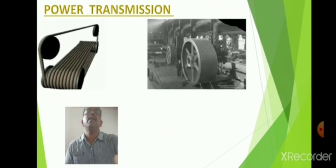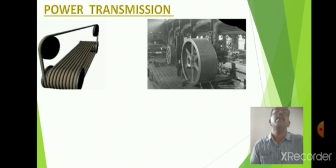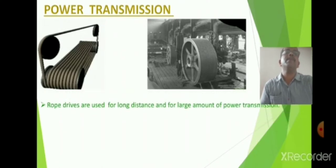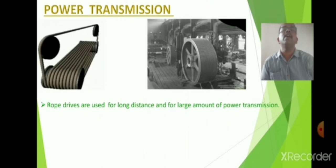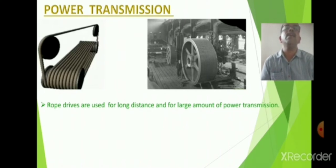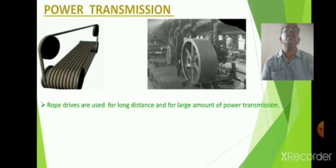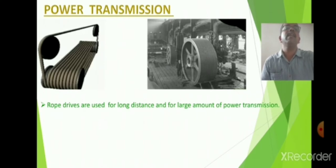A sketch is given above showing rope and chain. Rope drives are used for longer distances and for large amounts of power transmission. You can see in the sketch that one pulley is in one corner and the other pulley is in the other corner, illustrating that rope drives are suitable for long distances. That is one advantage of this rope drive.